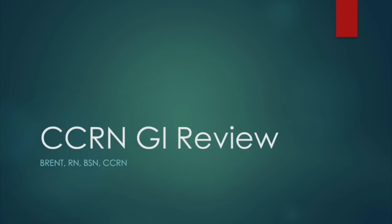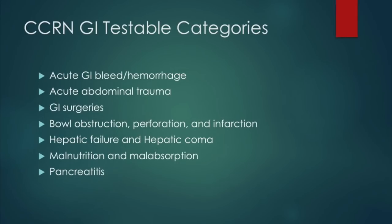Welcome to another CCRN review video. This one focuses on the GI review. The GI portion of the CCRN test has a few testable categories, ranging from acute GI bleed to pancreatitis.